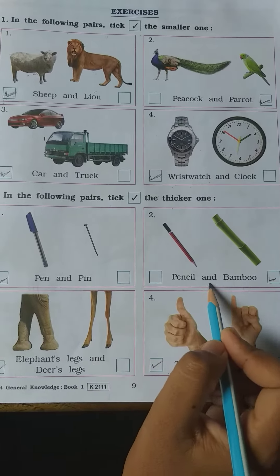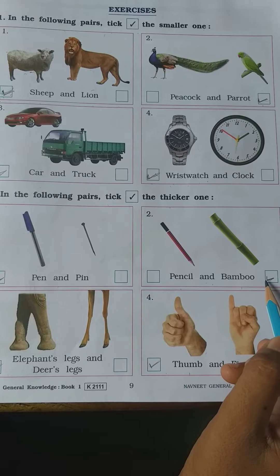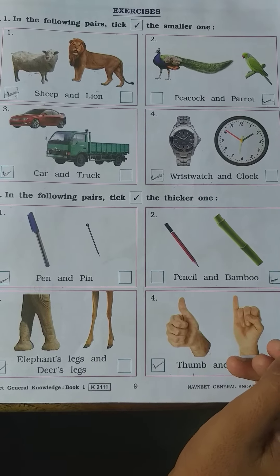Number 2: pencil and bamboo. Bamboo is thicker, tick in bamboo.